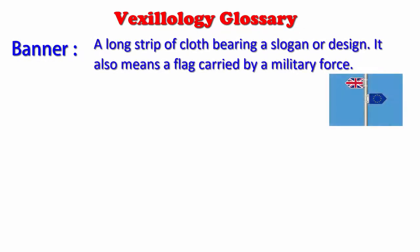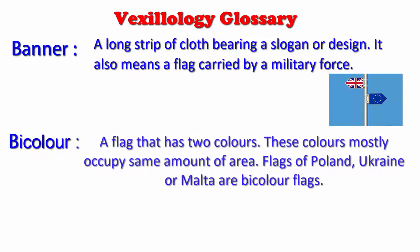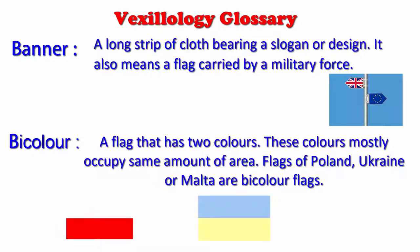Pena: a long strip of cloth bearing a slogan or design. It also means a flag carried by a military force. Bi-Color: a flag that has two colors. These colors mostly occupy the same amount of area. Flags of Poland, Ukraine, or Malta are bi-color flags.